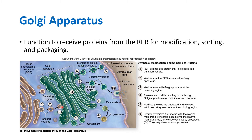The Golgi apparatus accepts proteins from the rough ER, stores them, and ships them out after tagging them so they go to their final destination. Part of the Golgi apparatus gets pinched off as vesicles carrying tagged proteins. Some proteins exit the cell entirely and go to another cell, some get embedded in the plasma membrane, and some become a new organelle called the lysosome.